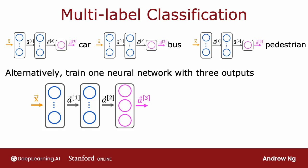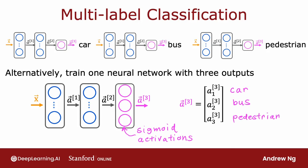And because we're solving three binary classification problems - is there a car, is there a bus, is there a pedestrian - you can use a sigmoid activation function for each of these three nodes in the output layer. And so A3 in this case will be A31, A32, and A33, corresponding to whether or not the learning algorithm thinks there's a car and/or a bus and/or pedestrians in the image.